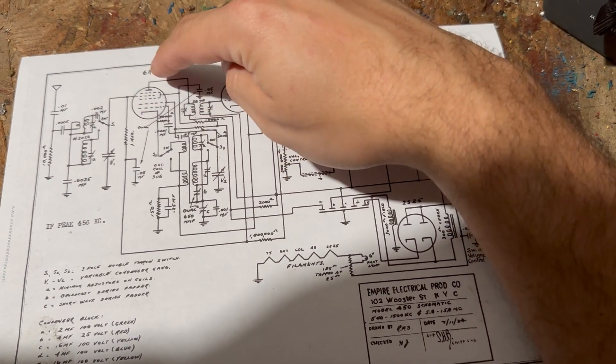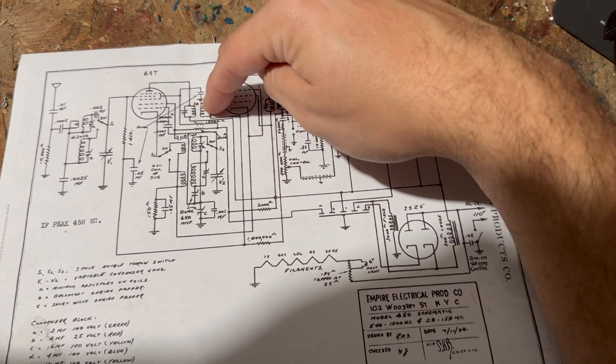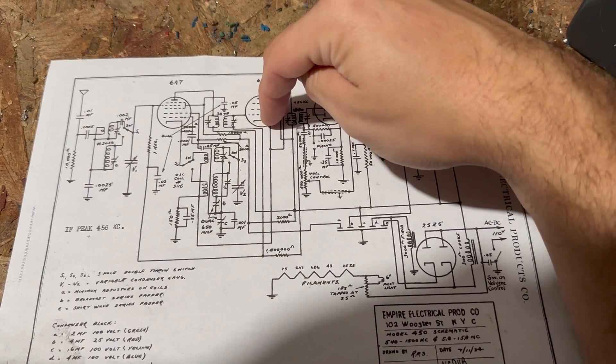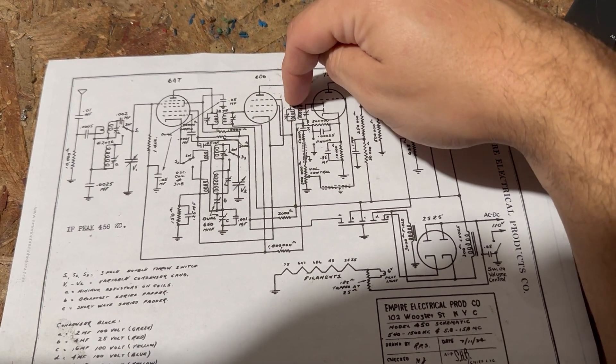It goes through the tubes here to the plate, through the first IF transformer over here to the grid and then the plate, you know, getting amplified.